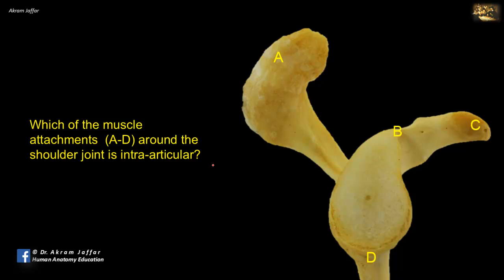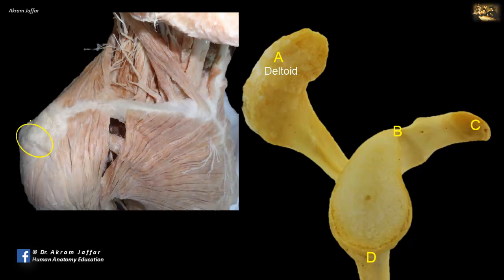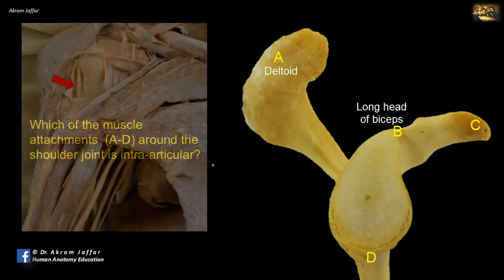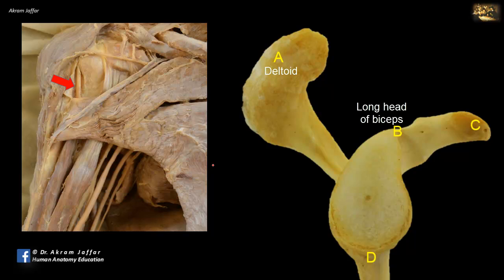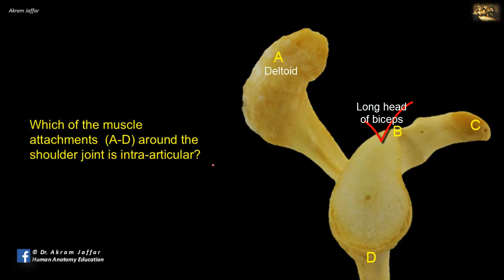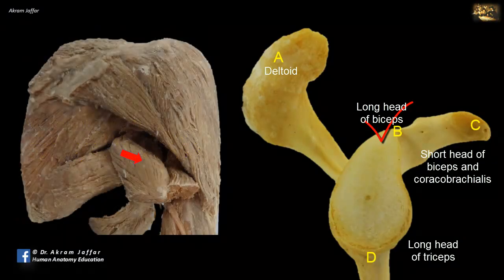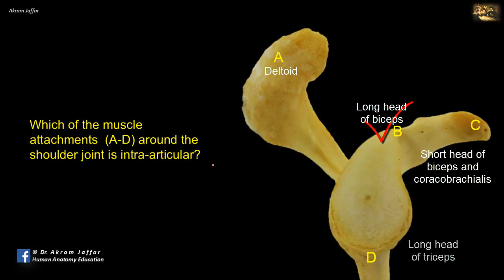Which of the muscle attachments A to D around the shoulder joint is intraarticular? A is the lateral border of the acromion, where the deltoid muscle is attached. B is the supraglenoid tubercle of the scapula, where the long head of biceps brachii is attached — within the capsule of the shoulder joint. C is the tip of the coracoid process, which provides origin for coracobrachialis and the short head of biceps. D is the infraglenoid tubercle, which provides origin for the long head of triceps. All the muscles A, C, and D are attached outside the capsule of the shoulder joint.